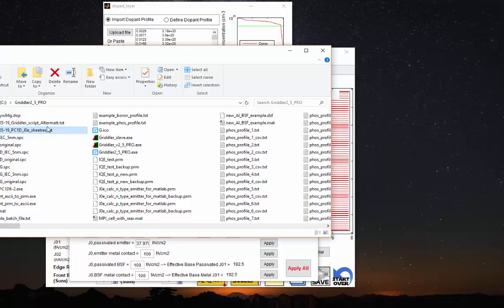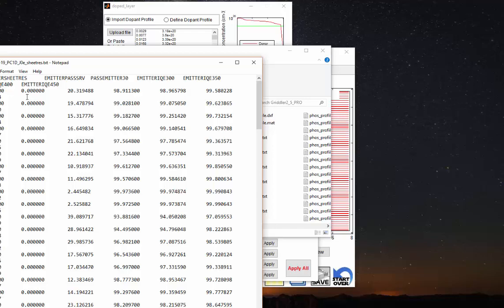So Gridler has just finished parsing all the different phosphorus profiles, and the results are here, where for each case ran, we have outputted for that profile an SRV, the sheet resistance, the SRV that is used to do the simulation, the calculated emitter J0, as well as the IQE evaluated at different wavelengths 300, 350, 400, and 450.